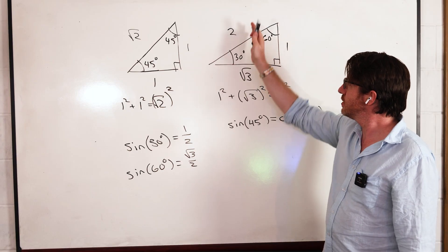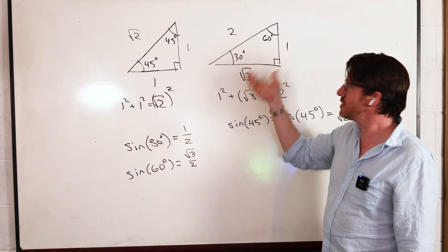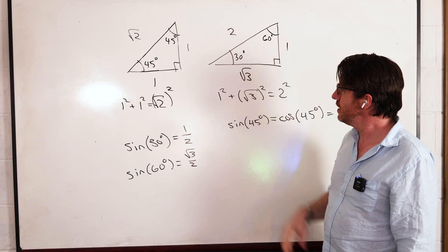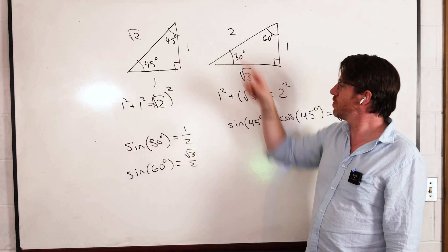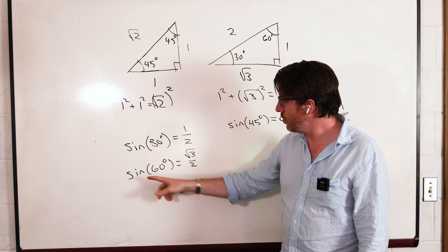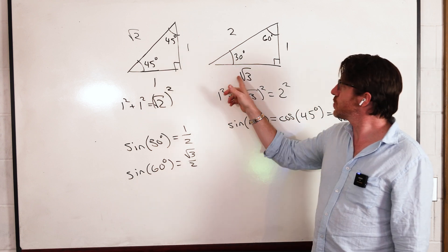And this guy is the 30, 60, 90 triangle. This is 1, 2, square root of 3. And if you want to compute sine of 30 degrees, then it's going to be opposite over hypotenuse, 1 half. Or if you want sine of 60 degrees, square root of 3 over 2.